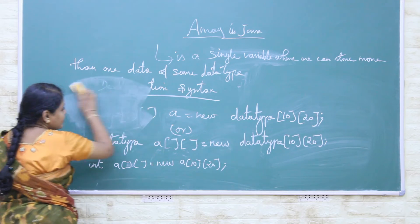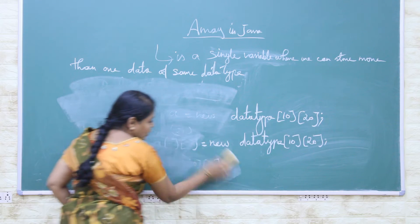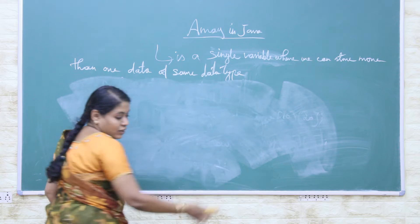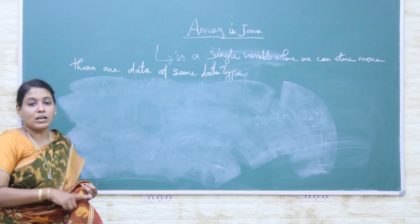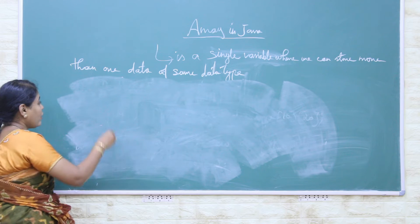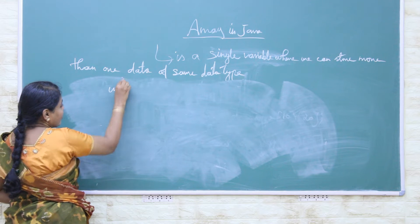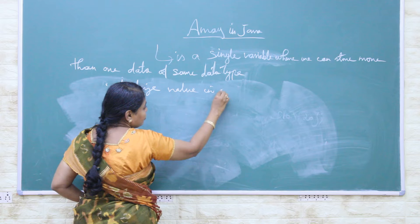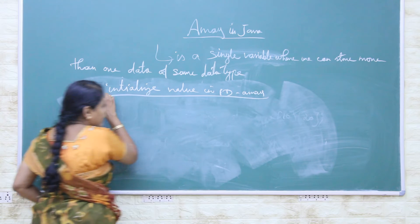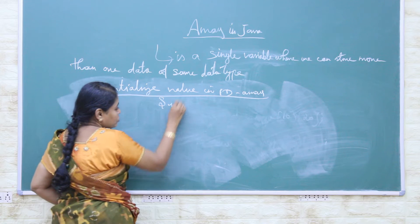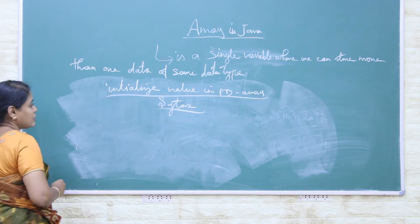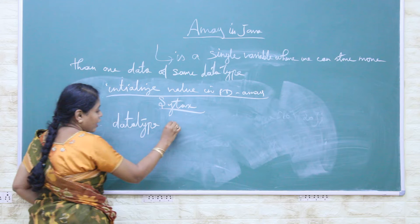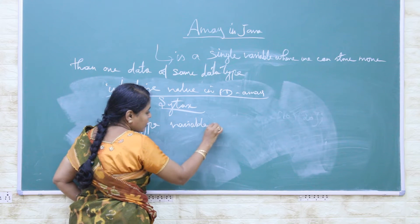Next we will see how to initialize values into the one-dimensional and two-dimensional array. In the previous video and this video I have explained how to declare the one-dimensional and two-dimensional array variable in Java. Now I will explain how to initialize the values in a one-dimensional array. It also has a syntax: data type and variable name, which may be any user-defined name, followed by equals new.